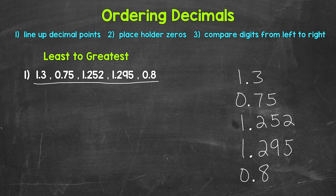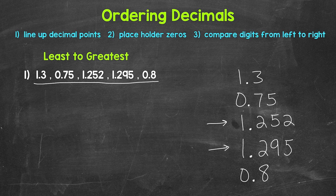Remember, zeros to the right of decimal digits do not change the value of the decimal — it gives us an equivalent decimal. So we need to find the decimal that goes to the furthest place to the right. That's going to be the thousandths place. So let's use placeholder zeros to the right of the other decimals to make them go to the thousandths place as well. For one and three tenths, we need a placeholder zero here and here. For seventy-five hundredths, we need a placeholder zero here, and for eight tenths, we need a placeholder zero here and here. Now this looks a little more lined up and neater, and this will help us order.